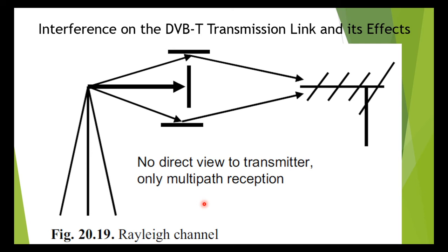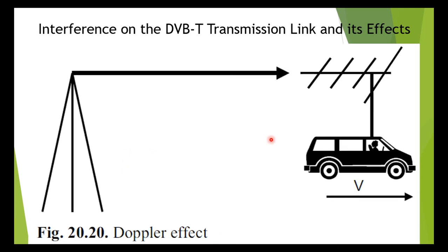If the receiver is moving at a certain speed away from or towards the transmitter, a negative or positive frequency shift — delta F — will occur due to the Doppler effect. This frequency shift by itself does not present any problem to the DVB-T receiver, which will compensate for it by means of its AFC (automatic frequency control). It can be calculated from the speed of movement, the transmitting frequency, and the velocity of light: delta F = V × F / C × cos(φ), where V is velocity, F is transmitting frequency, and C is the velocity of light (3 × 10⁸ m/s).